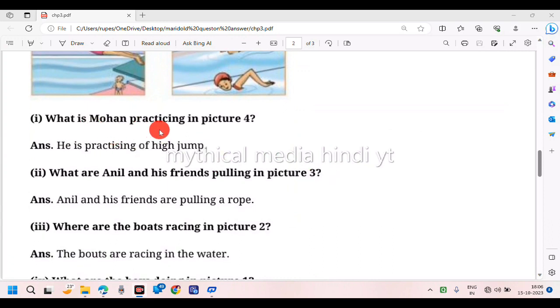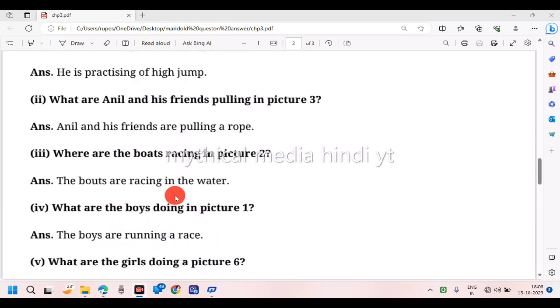What is Mohan practicing in picture four? He is practicing high jump. What are Anil and his friends pulling in picture three? Anil and his friends are pulling a rope. Where are the boats racing in picture two? The boats are racing in the river. What are the boys doing in picture one? The boys are running a race.